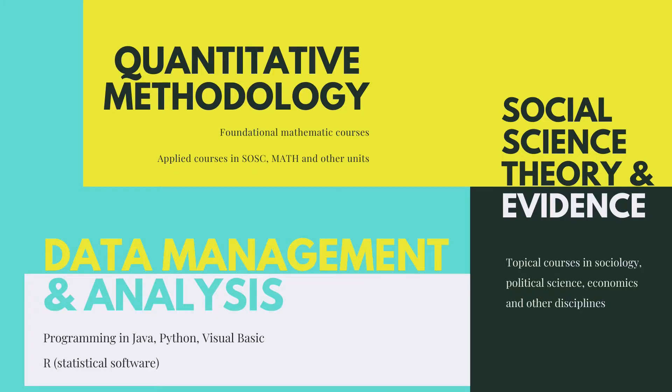Our undergraduate curriculum has three elements. First, quantitative methodology: students take foundational mathematics courses in their first year, and then take advanced courses in social science, mathematics, and other disciplines to learn the methods they need. Second, social science theory and evidence: students will take topical courses in sociology, political science, psychology, and other disciplines to understand the broader context of their analysis. Third, data management: students will learn how to analyze social problems and data with programming skills and software like RStudio, Python, and other languages and packages, which are the basics for social data analysis.